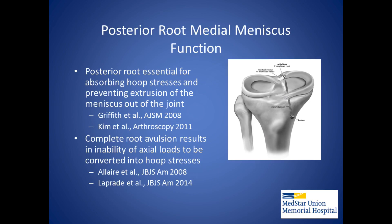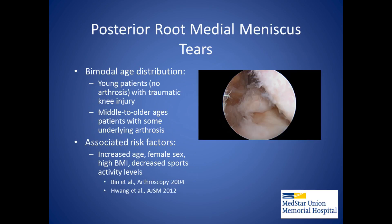The posterior root is essential for absorbing hoop stress and preventing extrusion of the meniscus out of the joint, and complete root avulsion results in an inability of axial loads to be converted into hoop stresses. A bimodal age distribution has been noted, with young patients suffering traumatic injuries and middle-to-older patients with some underlying arthrosis.